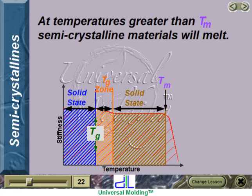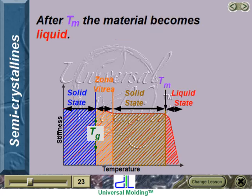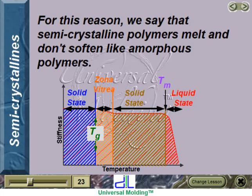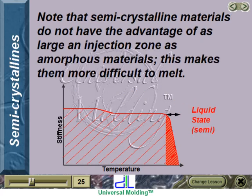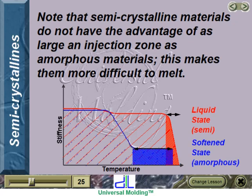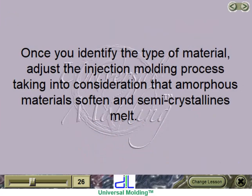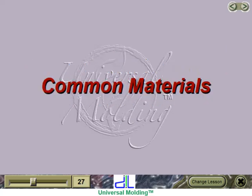At temperatures greater than Tm, semicrystalline materials will melt — after Tm, the material becomes liquid. For this reason, we say that semicrystalline polymers melt and don't soften like amorphous polymers. It is after Tm where semicrystalline materials are molded. Note that semicrystalline materials do not have the advantage of as large an injection zone as amorphous materials, which makes them more difficult to melt. Once you identify the type of material, adjust the injection molding process taking into consideration that amorphous materials soften and semicrystallines melt.